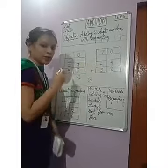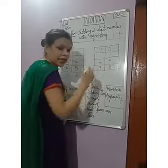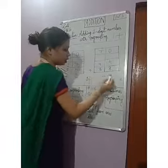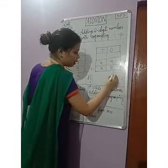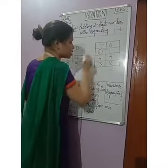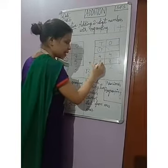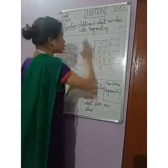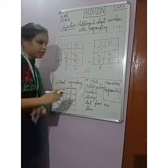Let us do another one for practice. 4 plus 8 equals 12. So in the 1's place we have 2 — 2 will come here, and this 1 will go to the 10's place. This is the carryover. So 4 plus 3 is 7, plus 1 is 8. The answer is 82. This is called addition of a two-digit number with regrouping, that is, carryover.